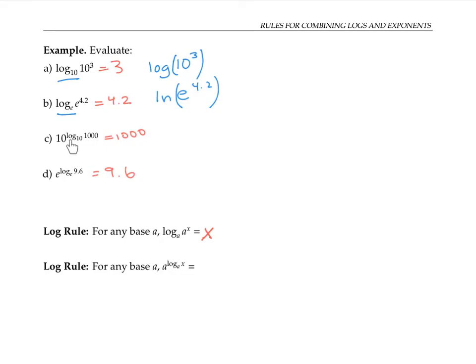For example, when we take 10 to the power of log base 10 of 1000, the 10 to the power and the log base 10 undo each other, and we're left with 1000. This happens for any base a: a to the log base a of x equals x.